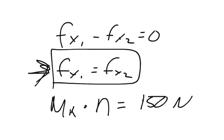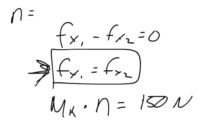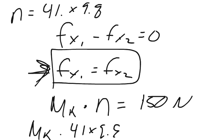So we know that the coefficient of kinetic friction times the normal force equals 150 newtons, because that was the force that was being pushed with. And so the normal force n equals the mass times acceleration, so mass times 9.8, 41 kilograms times 9.8 meters per second squared. So we can say that mu_k times 41 times 9.8 equals 150.